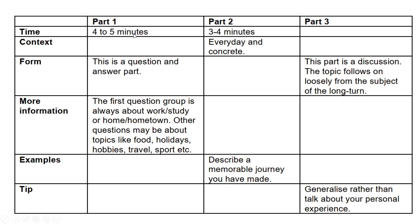In part one, the form is a question-and-answer section where you're asked questions basically about yourself. The first question group is always about work, study, or hometown, or topics primarily about you — for example, food, holidays, hobbies, travel, work. It can be related to your interests: movies, music, etc. There are lots of topics the examiner can ask you questions about.